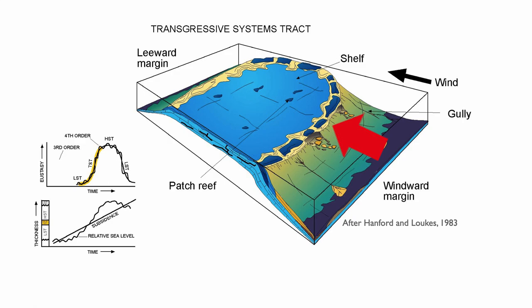That gives you nice clean waters where reefs will preferentially grow. So reefs will tend to grow more on the windward side, and they will protect the back of the island. In the leeward side, we tend to have more sand because it's more turbid, and sediments are moved from the windward side to the leeward margin of the island. That asymmetry is an important concept for isolated platforms.